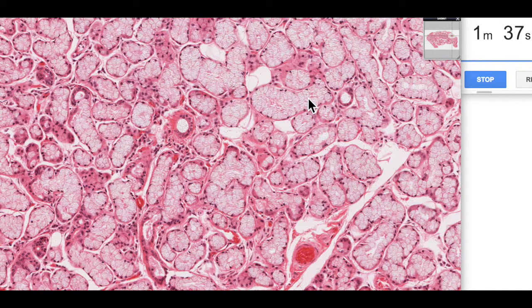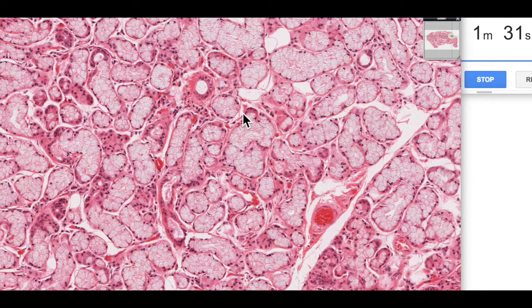Now if there is a serous component associated with these mucus acini, they often appear as these sort of little serous demilunes, little caps of serous cells which sit on the surface. And this is a little bit of artifact. When these cells have been processed, the mucus has sort of expanded and squeezed out the serous cells onto the surface of these mucus acini.